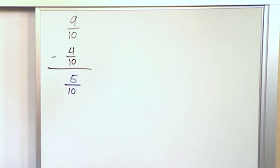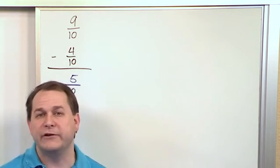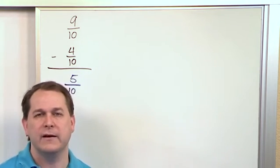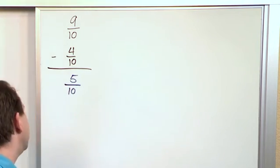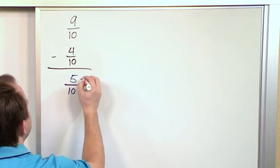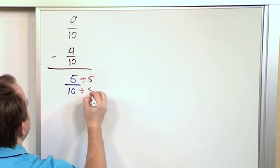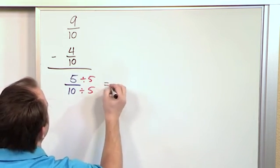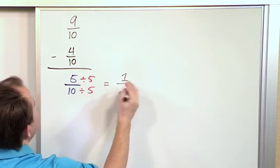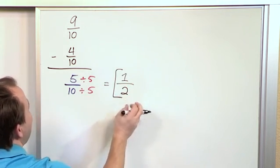Now almost always when you try to simplify fractions you try to divide by 2 first. In this case we can't divide both of these by 2, but we notice right away that we can divide this by 5 and we can also divide this by 5. So remember you can divide by anything you like as long as you do it in the top and the bottom. So this will be 5 divided by 5 is 1, 10 divided by 5 is 2, so you get 1/2.